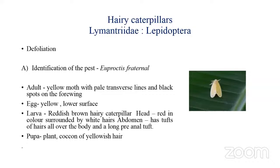The next group is the hairy caterpillars. There are three hairy caterpillars known to attack castor, all belonging to family Lymantriidae and order Lepidoptera. The first is Euproctis fraterna. The yellowish moth has transverse lines on the forewings and lays flat yellowish eggs mostly on the lower surface of the leaves, covering them with yellowish hair.